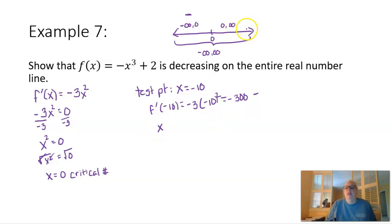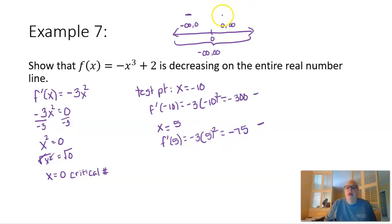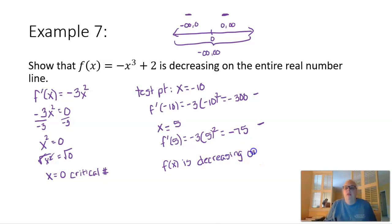F prime of 5 equals negative 3 times 5 squared. 5 squared is 25, and 25 times negative 3 is negative 75 — also a negative number. So the function is decreasing on the right side as well. We've shown that f of x is decreasing on the interval from negative infinity to zero and from zero to positive infinity, which is the entire real number line.